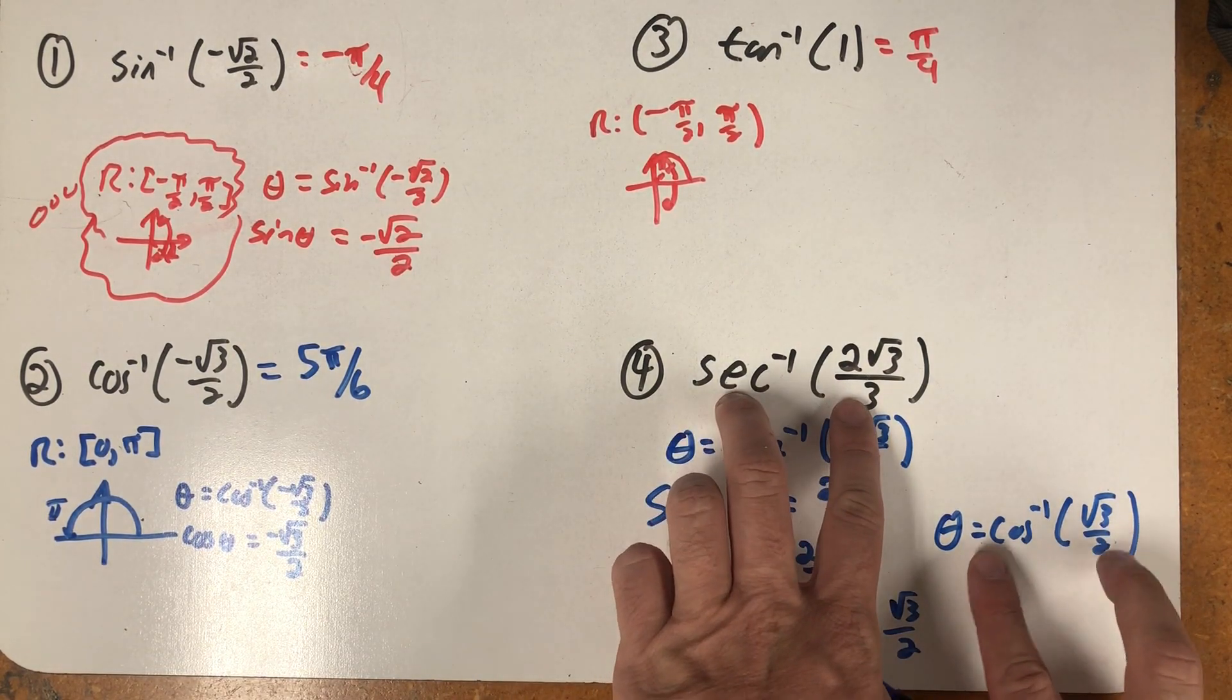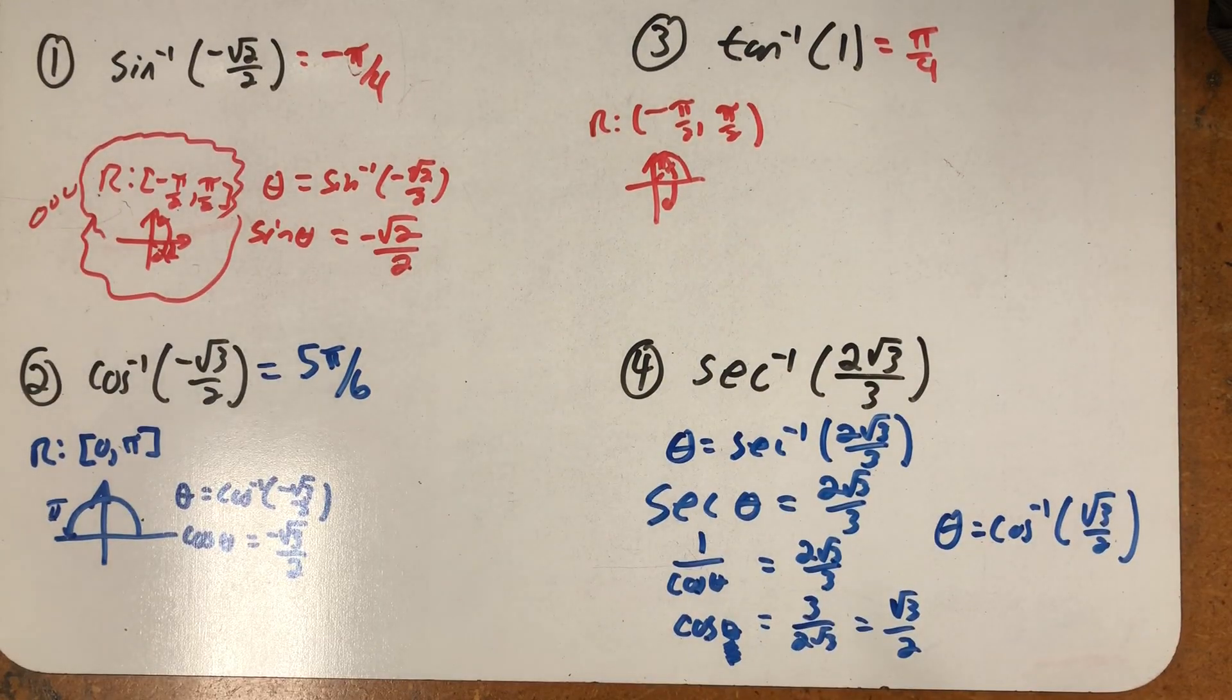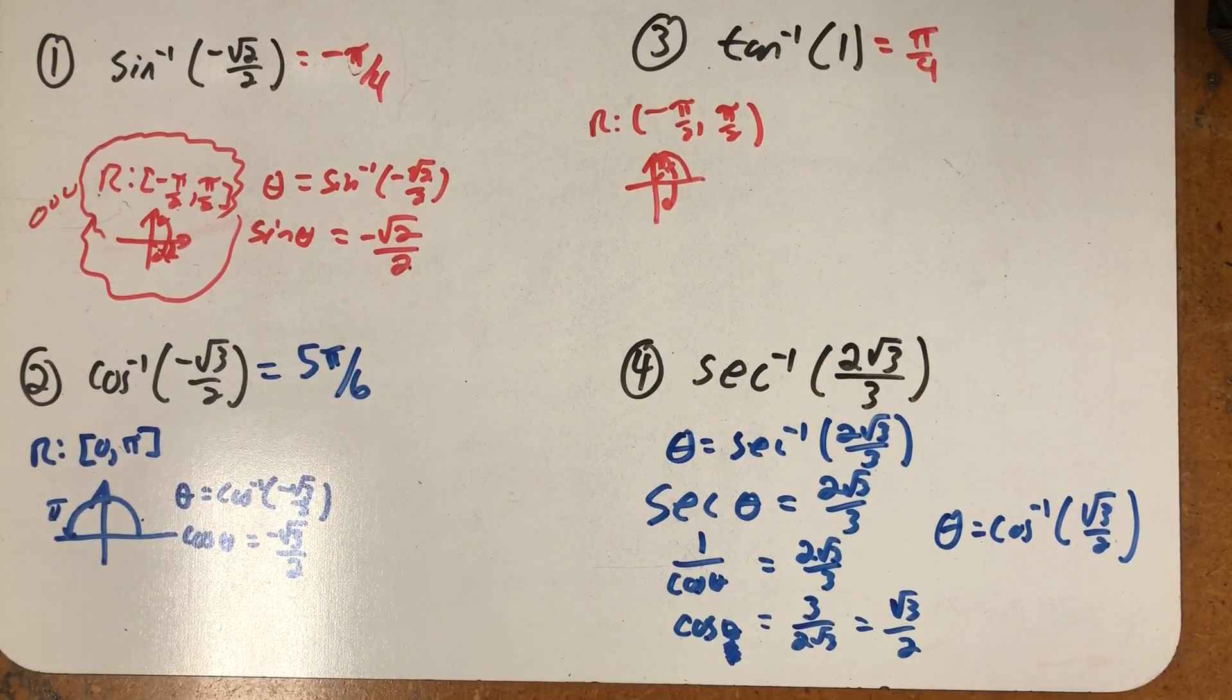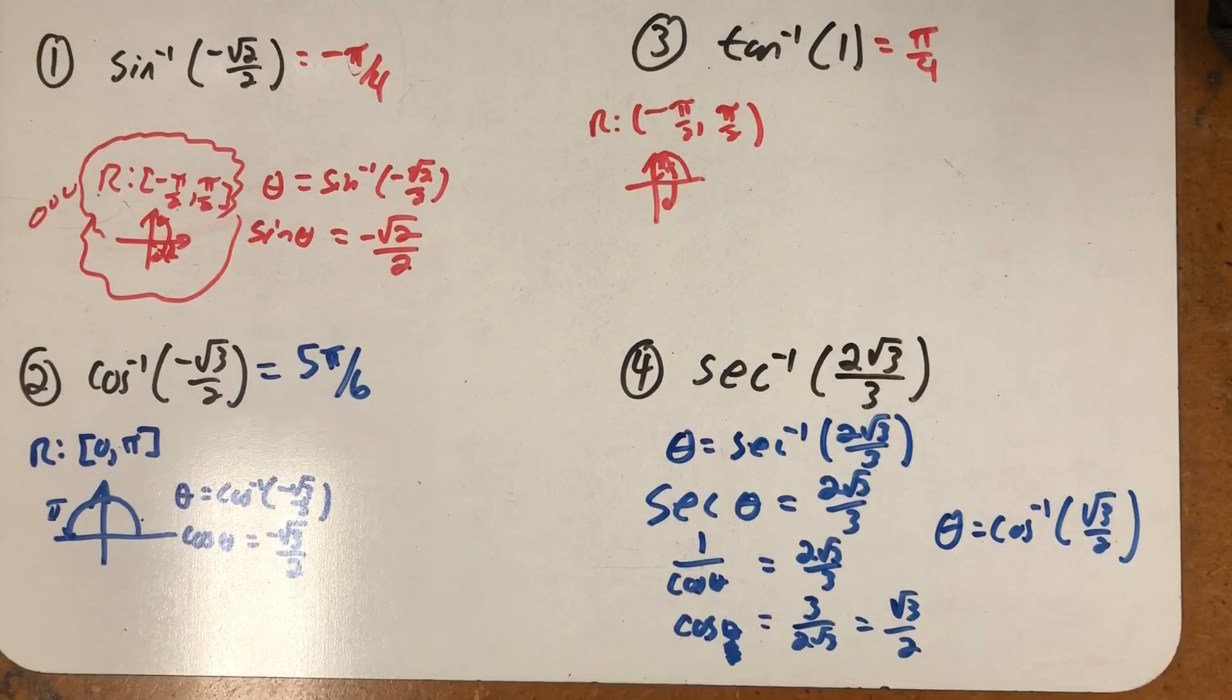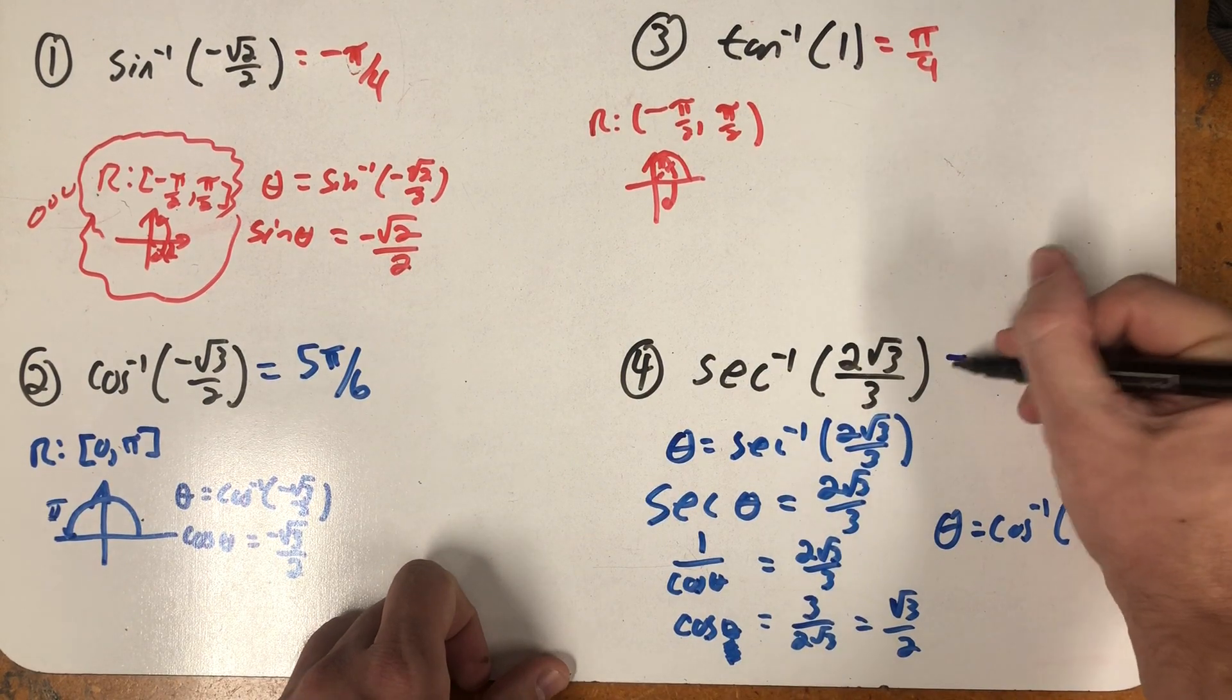But in looking at these two, I realized where the reciprocal happens. It happens on the inside, and I could always write it out like this, and that way I make sure I get that reciprocal correct. But now I'm really just looking for the inverse cosine of root three over two. I'm looking for a place in the first quadrant where cosine is equal to root three over two, and that's pi sixths.